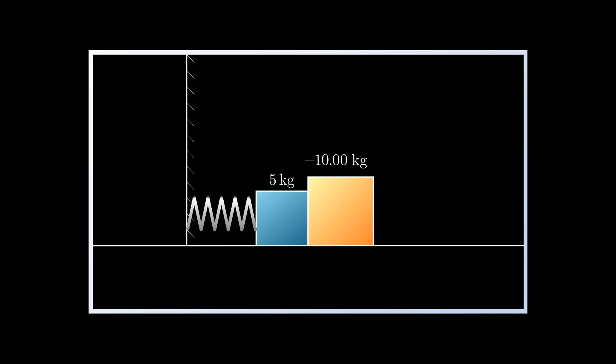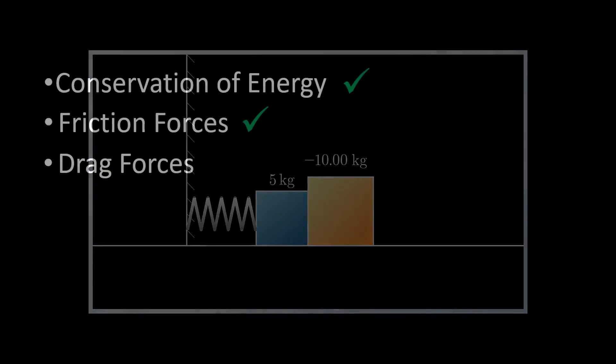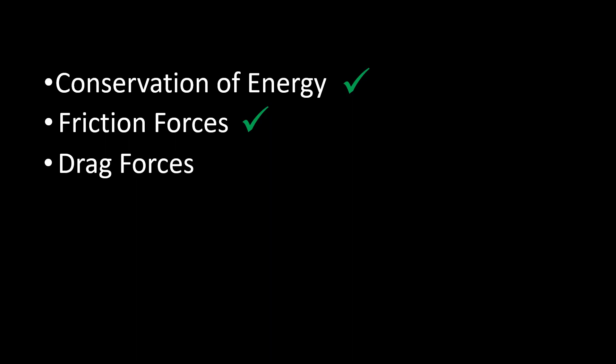However, since solid objects are ultimately made of atoms themselves, this is a problem that we're going to have to solve with atomic microphysics in part 4. But before that, there's one more Physics 101 problem I want to talk about, which I hinted at earlier: gravity.